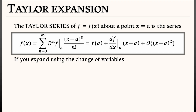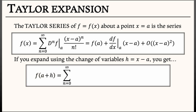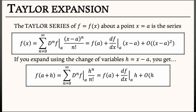If you expand using the change of variables h equals x minus a — that is, the distance to a — then what you get is f at a plus h equals the sum as n goes from 0 to infinity of the nth derivative of f at a, times h to the n over n factorial. That is, it's a polynomial in h. Expanding that out gives f of a, plus the derivative of f with respect to x at a times h, plus all the terms of order h squared and higher.